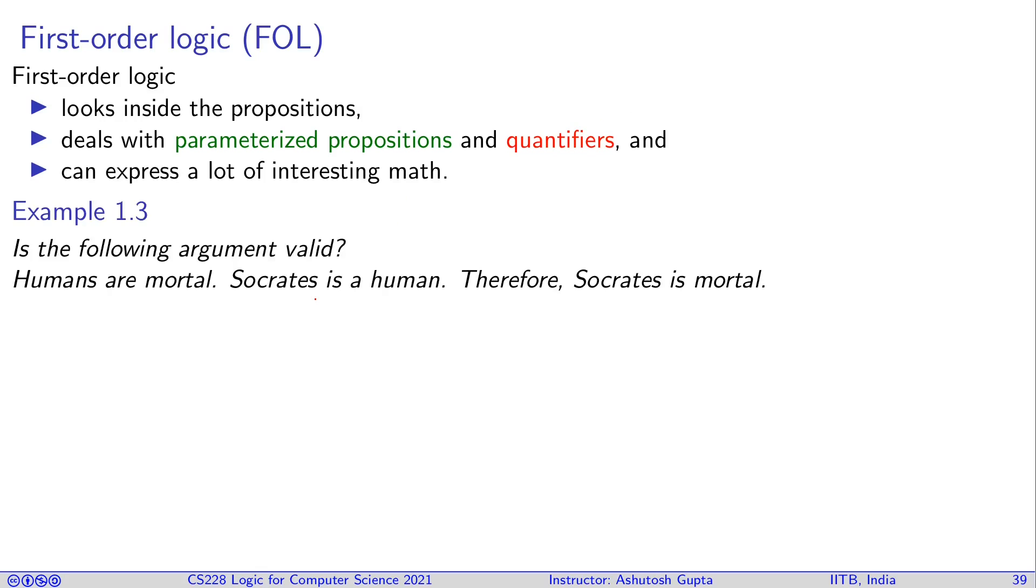And let's look at an example. We have seen this example before. Humans are mortal, Socrates is a human, therefore Socrates is mortal. Let's see how can we write this argument in a symbolic form or some formal form.